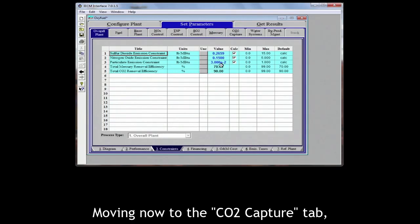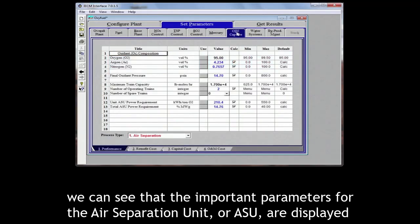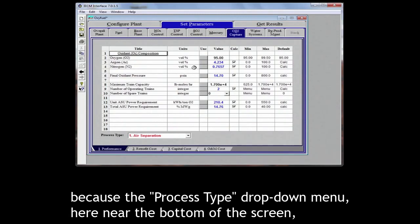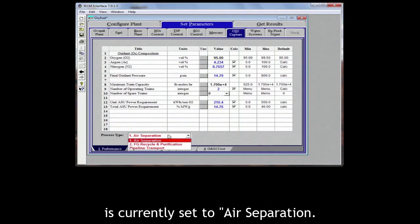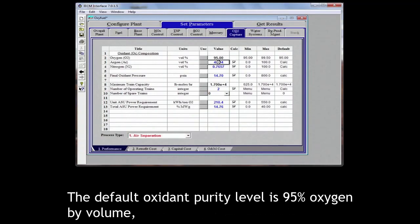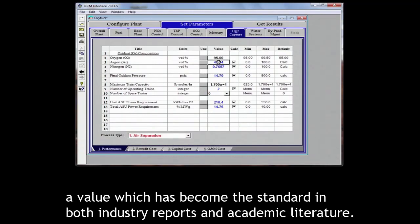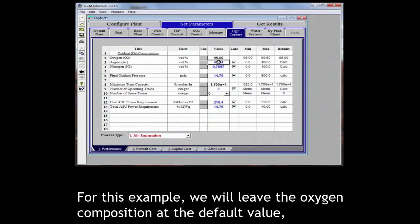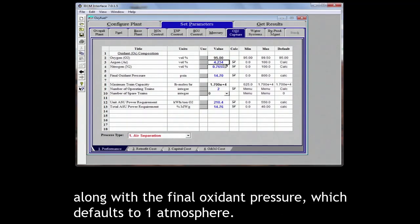Moving now to the CO2 capture tab, we can see that the important parameters for the air separation unit or ASU are displayed because the process type drop down menu here near the bottom of the screen is currently set to air separation. The default oxidant purity level is 95% oxygen by volume, a value which has become the standard in both industry reports and academic literature. For this example, we will leave the oxidant composition at the default value, along with the final oxidant pressure, which defaults to one atmosphere.